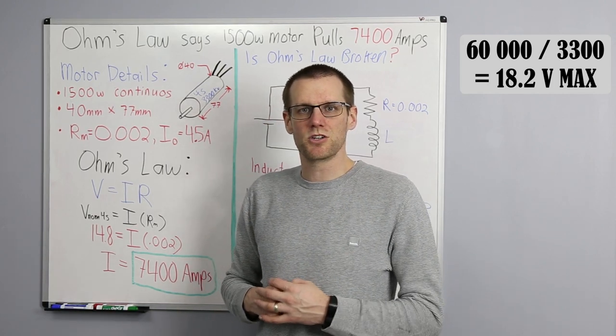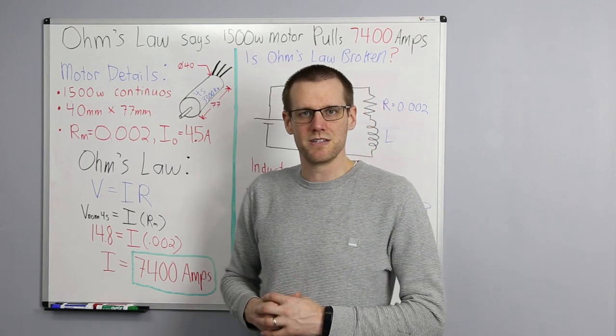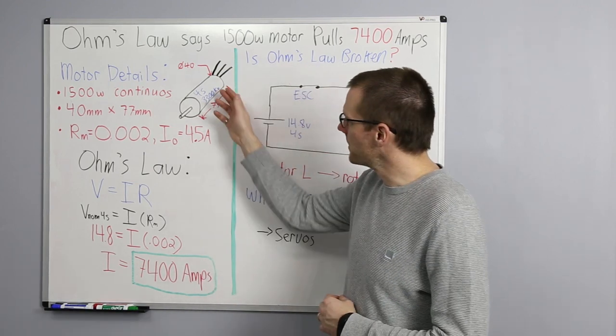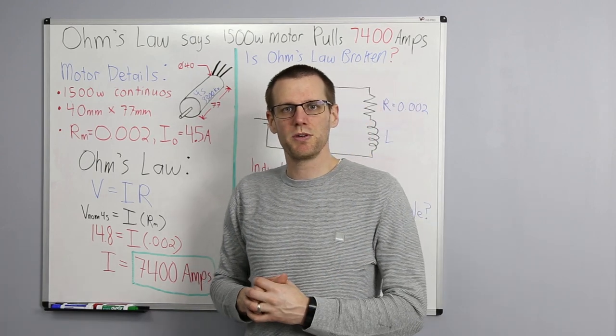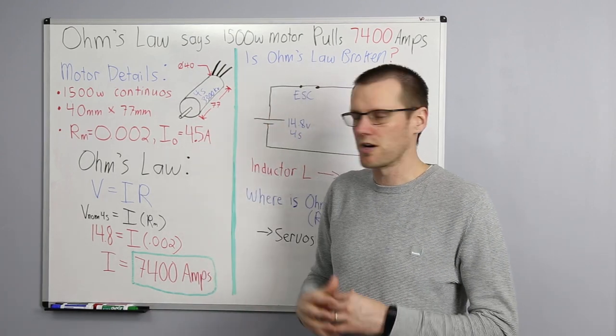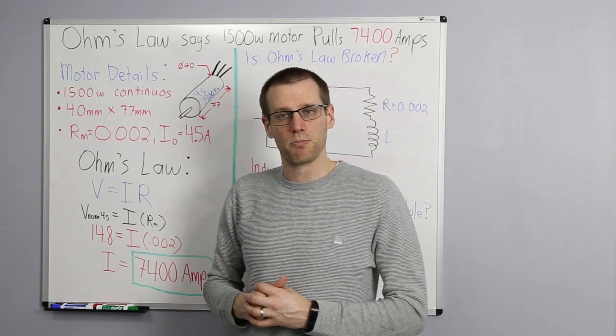A 5S lipo would actually go above and beyond that 60,000 RPM, and that is not acceptable. So in this case, we are going to be looking at this motor using that 4S maximum, and we'll be very close to that 60,000 RPM target for a maximum amount of total output RPM.